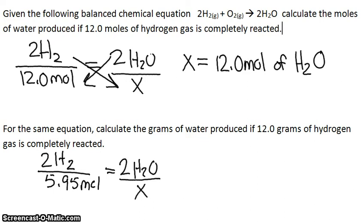And we're trying to find X, so we do our cross multiplication again. And we get that X is equal to 5.95 moles of H2O. But in the question, it asks us to find the grams of water produced, not the moles of water.